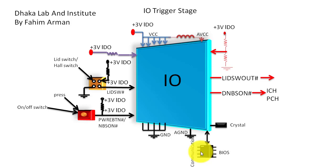After sending the signal to ICH or PCH, the IO chip communicates with BIOS, and this communication is very important. After communication with BIOS, IO will give its final voltage. We can see that after BIOS communication, IO creates RSM-RST. RSM-RST is the final voltage, and it is very important. When RSM-RST is found at the IO chip, we can say that the IO chip is good. Now I will show you how these voltages and signals enter into the IO chip, step by step.